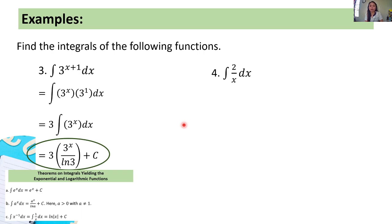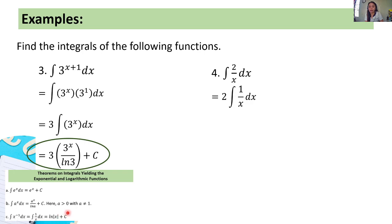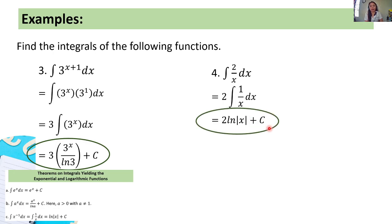Fourth example: find the integral of 2 over x dx. We can factor out the constant 2, giving us 2 times the integral of 1 over x dx. Using the third theorem, the integral of 1 over x dx equals the natural logarithm of the absolute value of x plus c. So the final answer is 2 times the natural logarithm of the absolute value of x plus c.